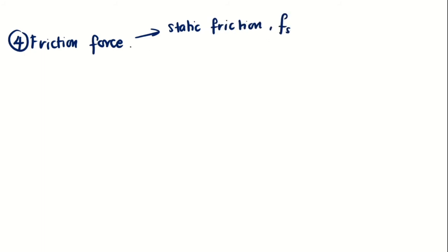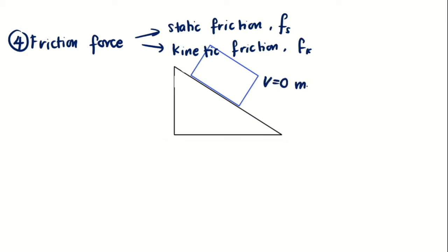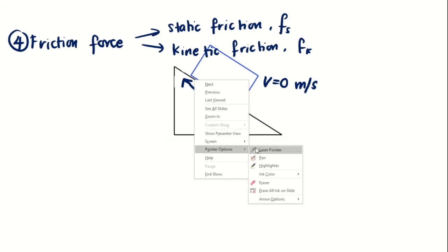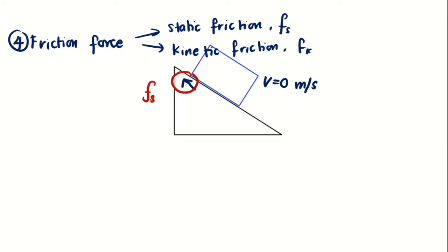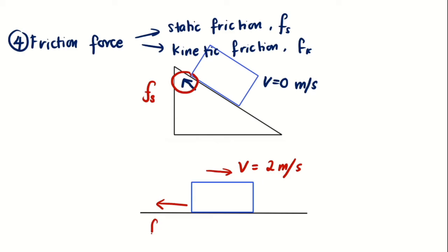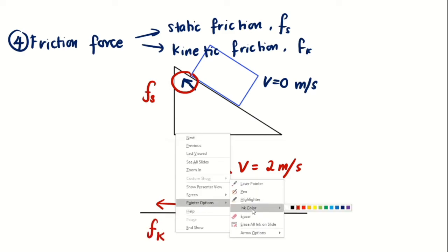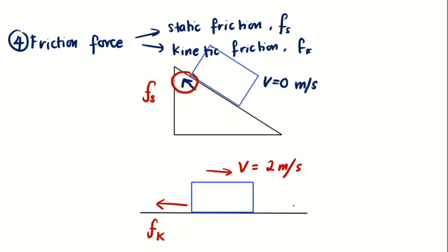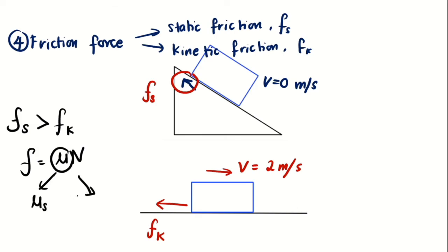For friction, there are two types: static friction (Fs) and kinetic friction (Fk). Static friction acts when the object is stationary, that is when v = 0 m/s. Kinetic friction acts when the object is moving. Generally, Fs is greater than Fk, meaning more friction force is exerted on a non-moving object. Using the equation F = μN, we substitute either the coefficient of static friction or the coefficient of kinetic friction accordingly.